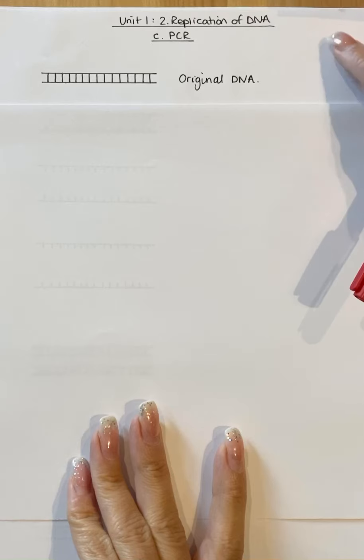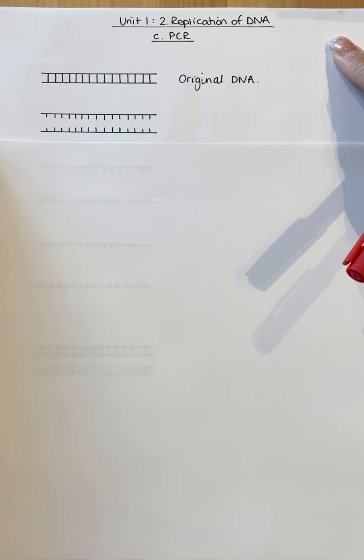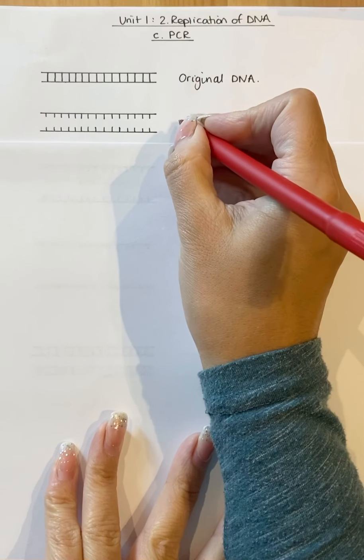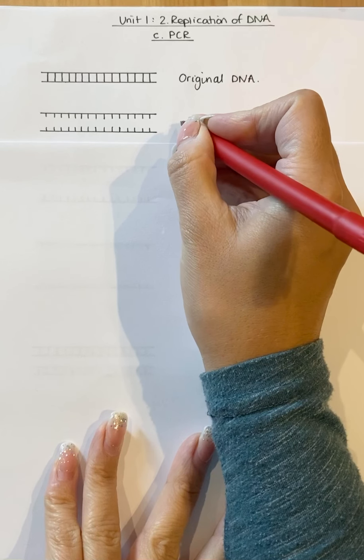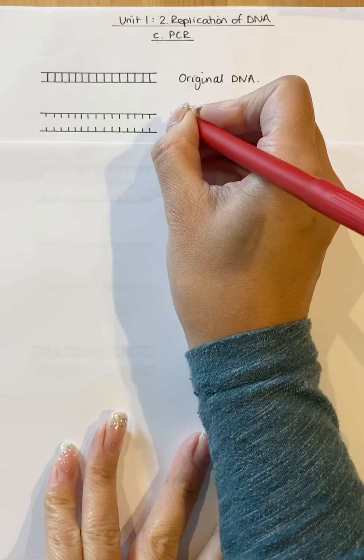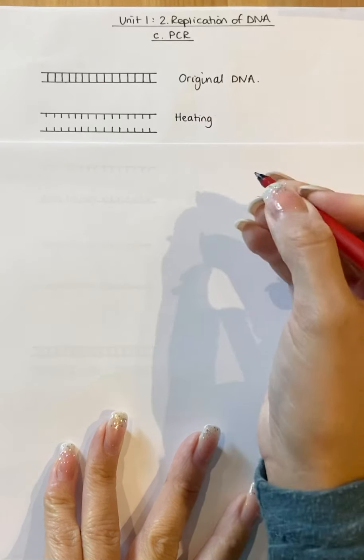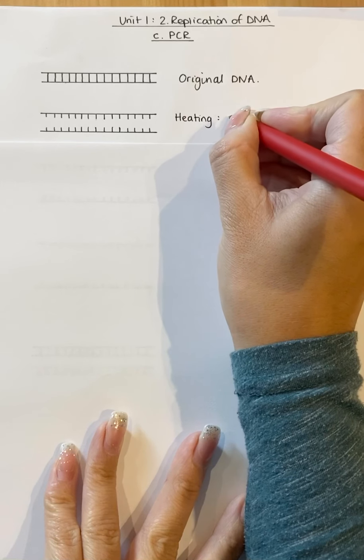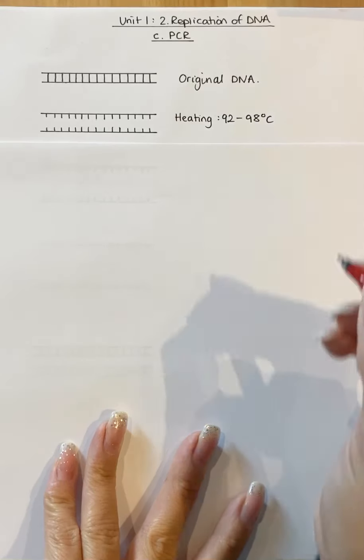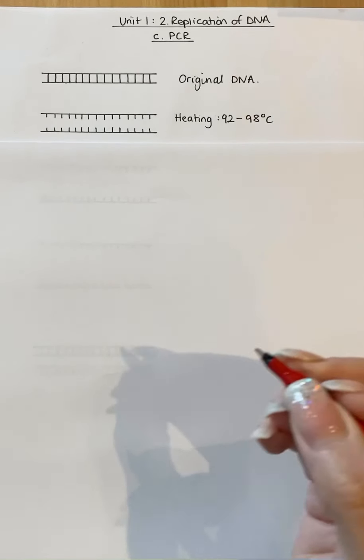Now the first stage in PCR is that that molecule of DNA must be separated. Now it is separated using a process that includes different temperatures. So this first way to separate it will involve heating it. And that heating will involve heating to 92 to 98 degrees Celsius. That then allows the strands to separate.